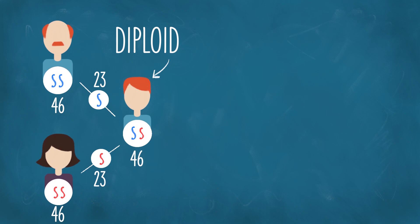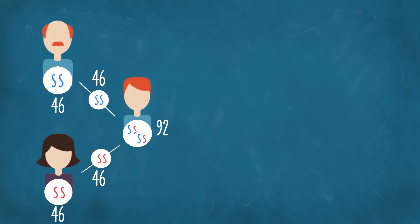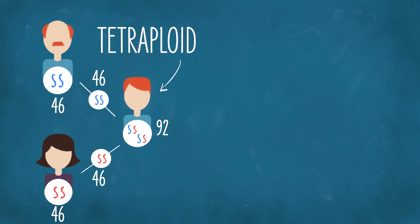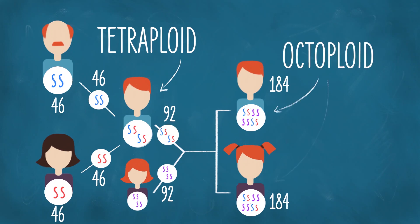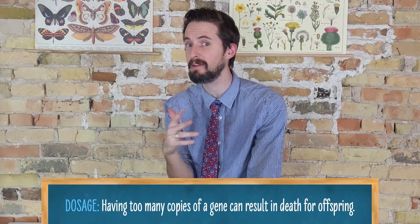Notice that each of your parents only gave you one of each type, even though they themselves have two of each type. If each of your parents gave you both of their chromosomes, you would have four of each chromosome type — 92 total — making you tetraploid. Your kids would have eight of each, 184 total chromosomes, and be octoploid, doubling each generation. Having too many copies of a gene can cause organisms to be very different from their parents and in many cases can result in death — this is due to something called dosage.